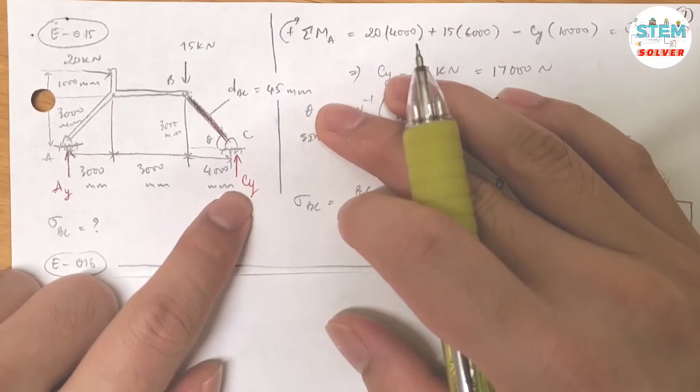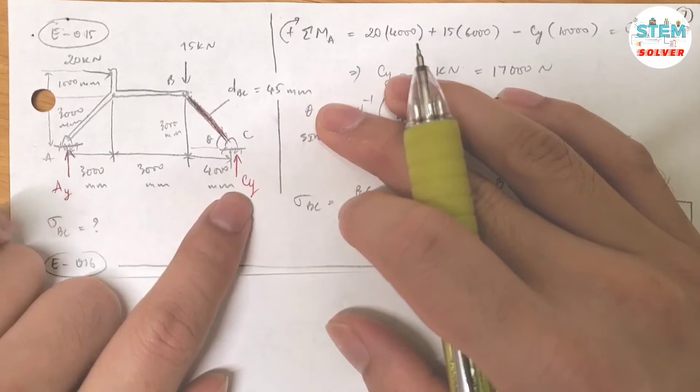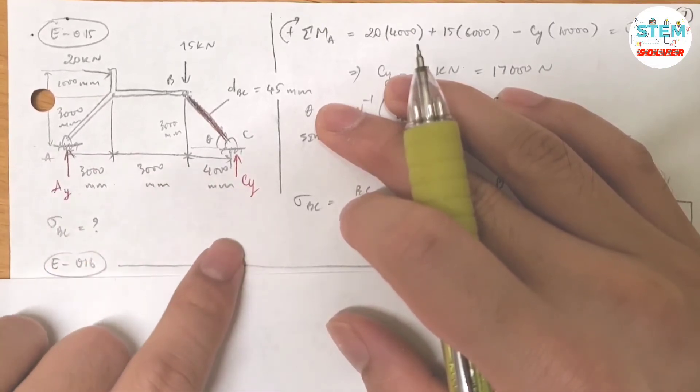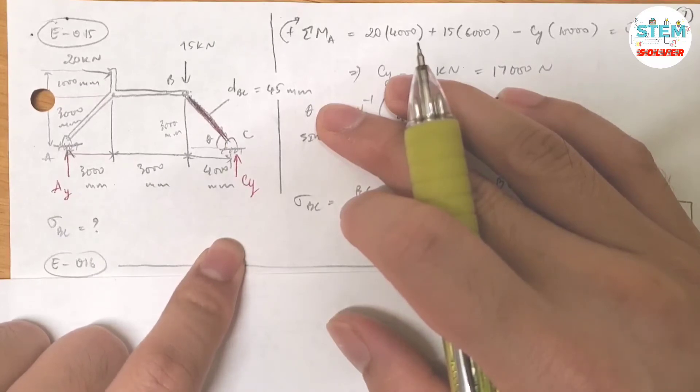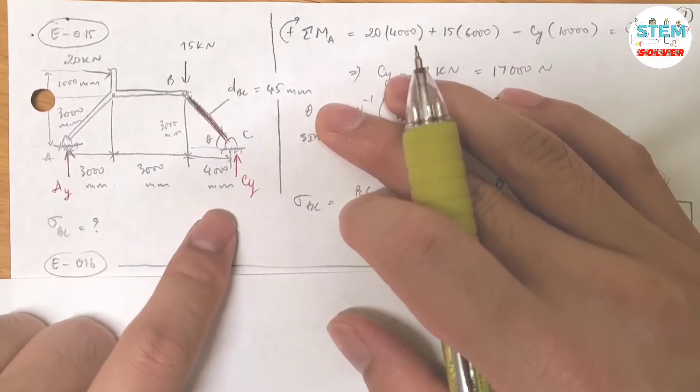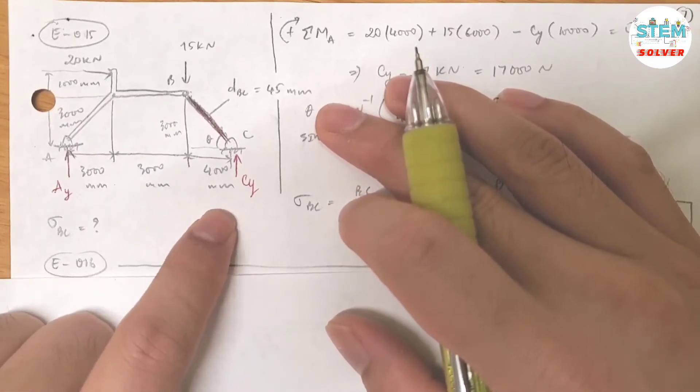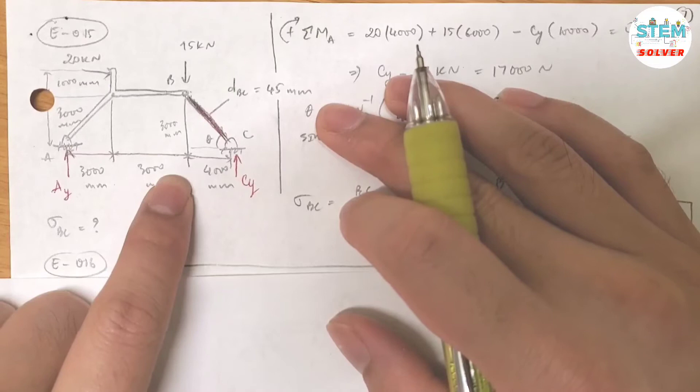If I want to find this one, I cannot use the summation about y because I have two unknowns. And there's no unknown for me to use the summation about x, so summation of Fx is useless here. So what's left is the moment.